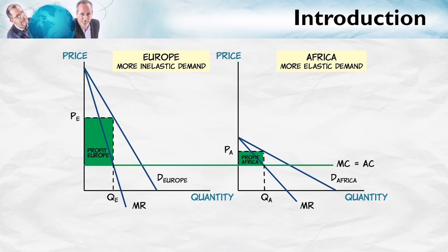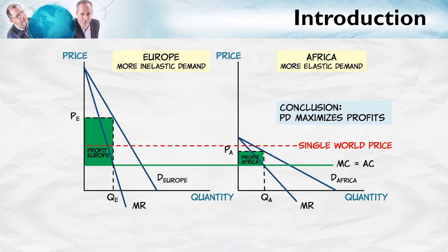Let's imagine that instead there was a single enforced world price for the drug. This price would be neither the profit-maximizing price for Europe nor the profit-maximizing price for Africa. For the supplier, profits would be lower with a single price than with two prices under price discrimination. Of course, price discrimination works only if it's possible to segment and separate the two markets. If smugglers can buy in Africa and sell in Europe, and most buyers end up buying the smuggled product, the drug supplier is mostly selling at the low African price, and that will not maximize their profits.